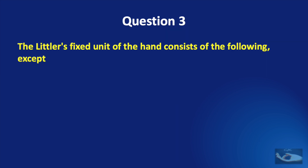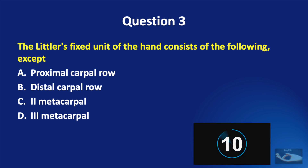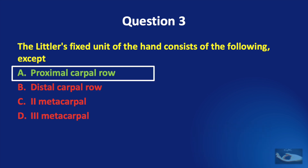Question number three: the Littler's fixed unit of the hand consists of the following except — the proximal carpal row, the distal carpal row, the second metacarpal, or the third metacarpal? The correct answer is the proximal carpal row, which does not form a part of Littler's fixed unit.